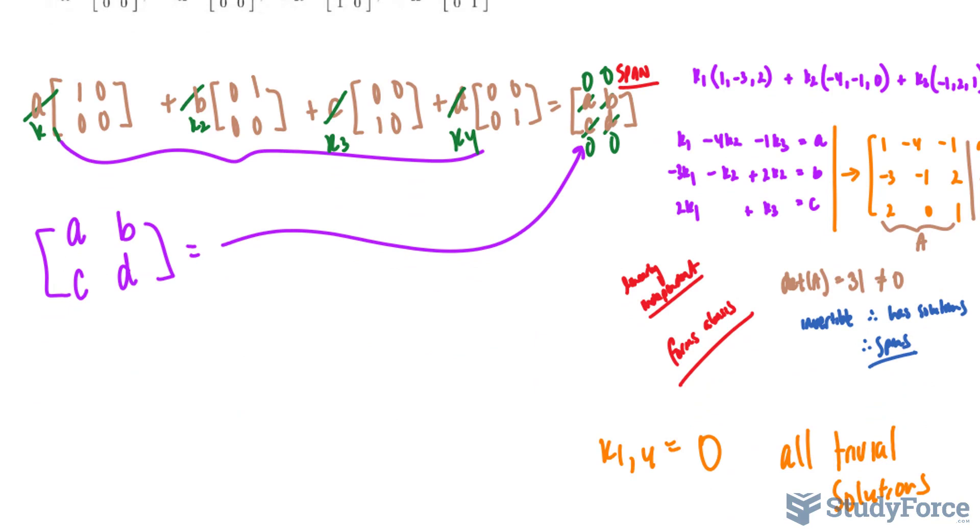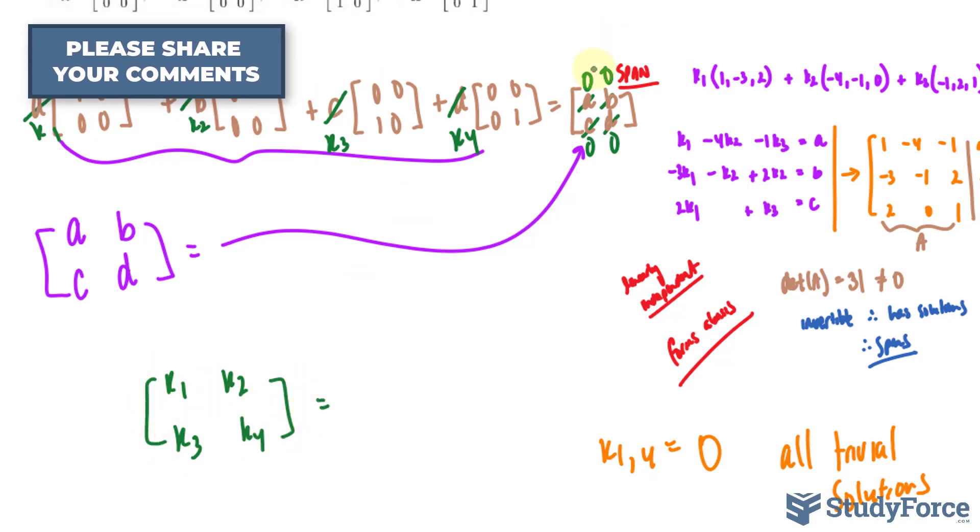Once again, if I multiply this out, I should end up with K sub 1, K sub 2, K sub 3, sub 4 is equal to 0, 0, 0, and 0.